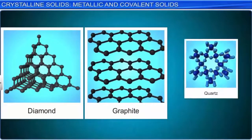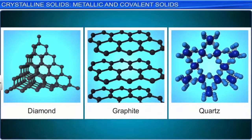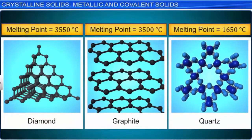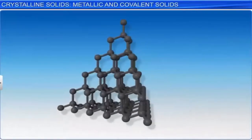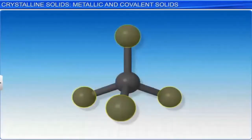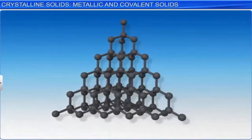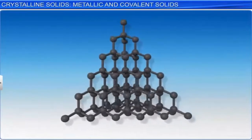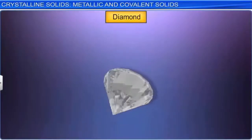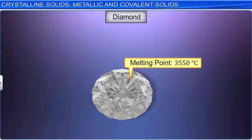As the atoms are held by strong covalent bonds, these solids are very hard and possess very high melting points. These solids are non-conductors of electricity, except for graphite. In diamond, each carbon atom is bonded tetrahedrally to four other carbon atoms. A regular tetrahedral arrangement of carbon atoms bonded to one another in a three-dimensional manner forms a rigid giant molecule. Diamond is the hardest substance known and has a melting point of 3550 degrees Celsius.